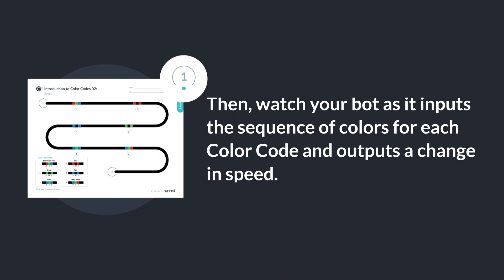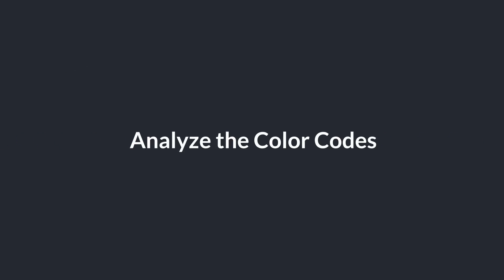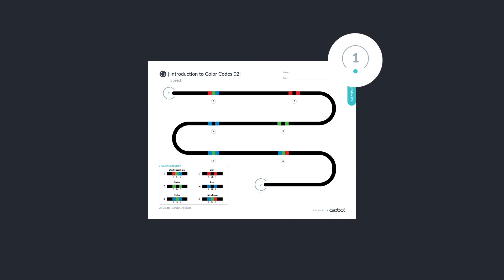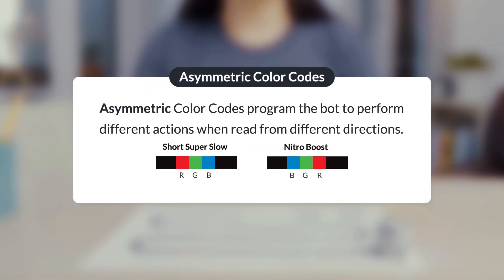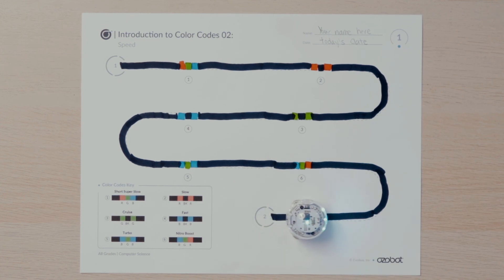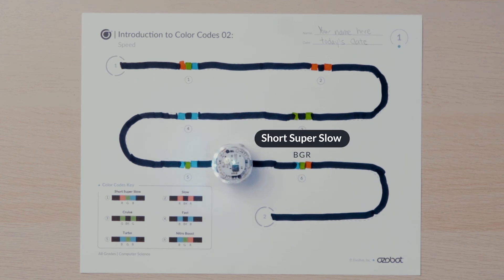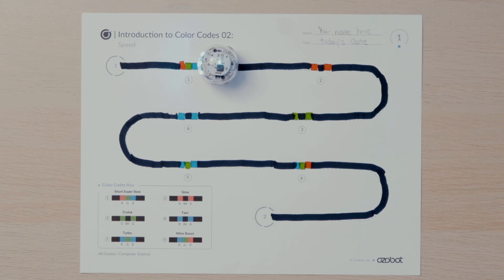Can you put your bot on start two? Then watch your bot as it inputs the sequence of colors for each color code and outputs a change in speed. As you watch your bot move along the pathway, did you notice any differences in speed? Two of the speed color codes are asymmetric codes that program the bot to perform different actions when read from different directions. Let's watch my bot in action — I'll put my bot on start number two. Now that the bot is traveling in the opposite direction, color code number six becomes RGB and instructs the bot to move super slow instead of a nitro boost. Next, the bot increases in speed when programmed by the turbo color code, then begins to decrease in speed until it reaches color code number one. Since the bot is traveling in the opposite direction, color code number one becomes BGR and instructs the bot to move quickly with a nitro boost.